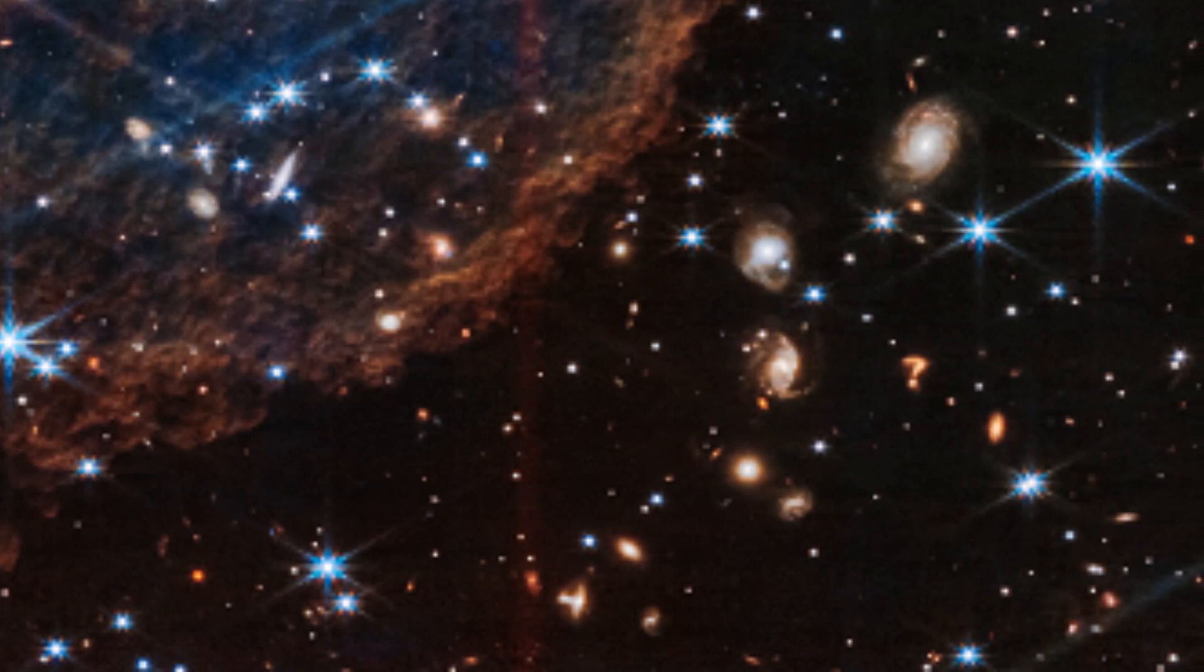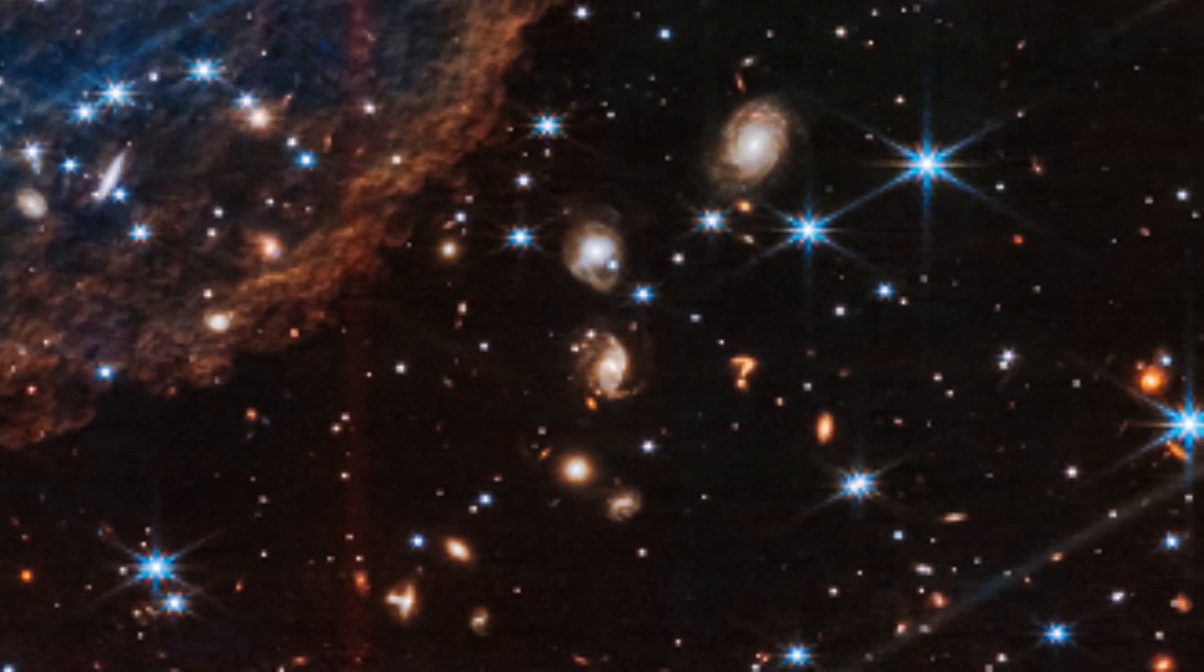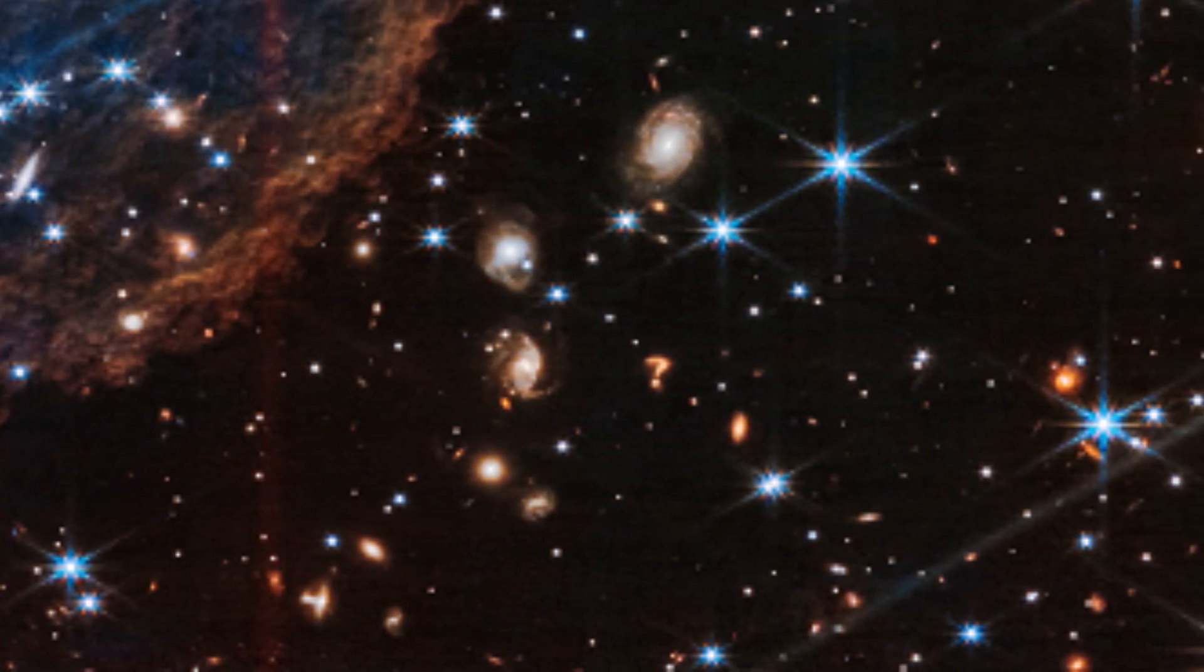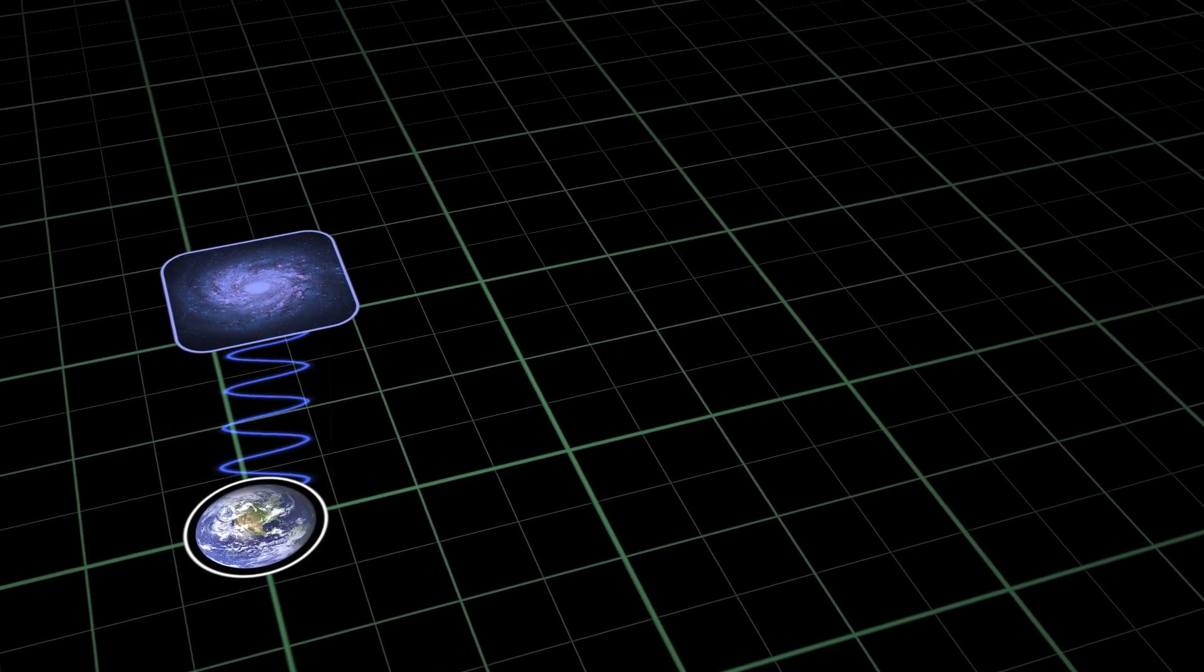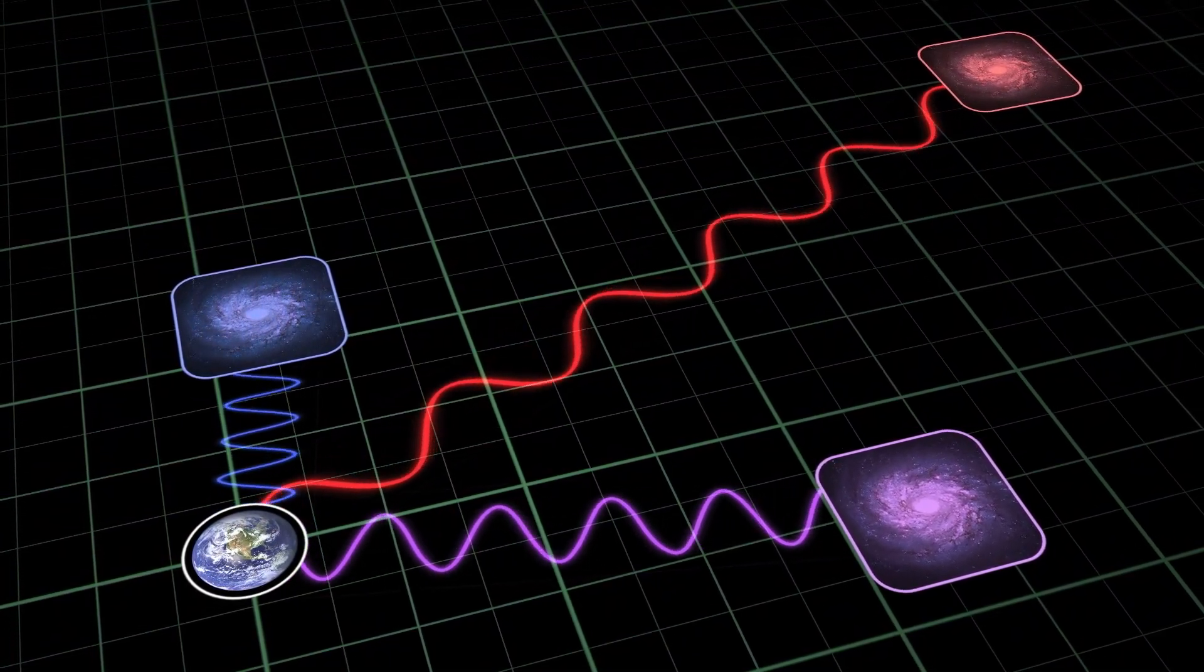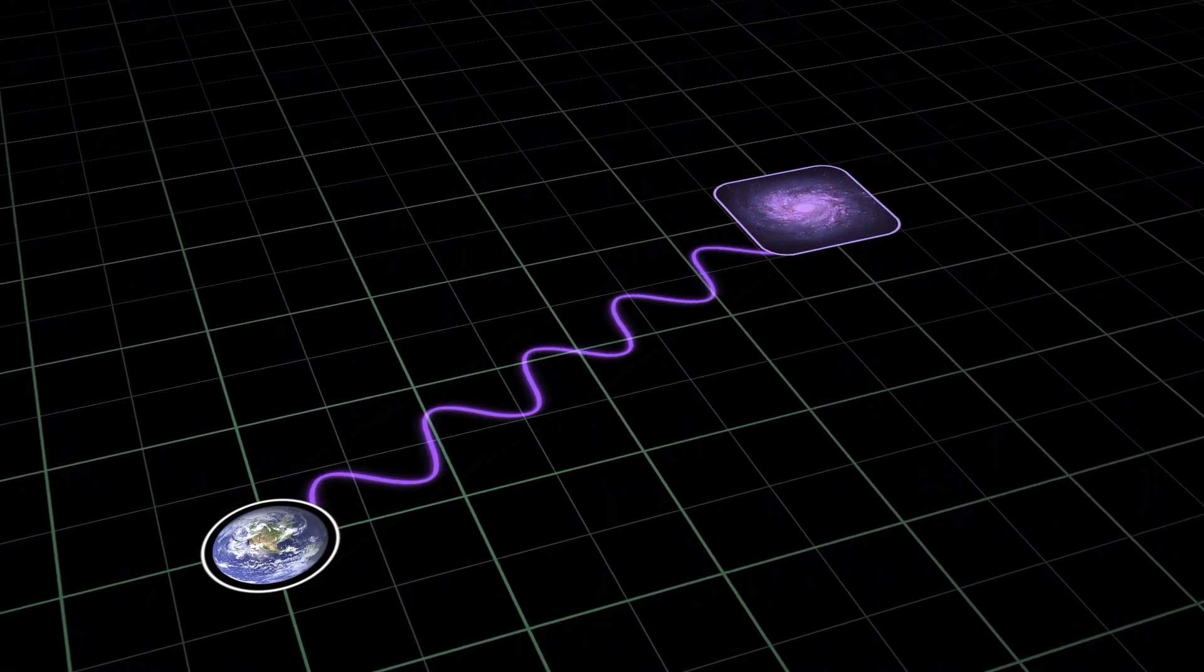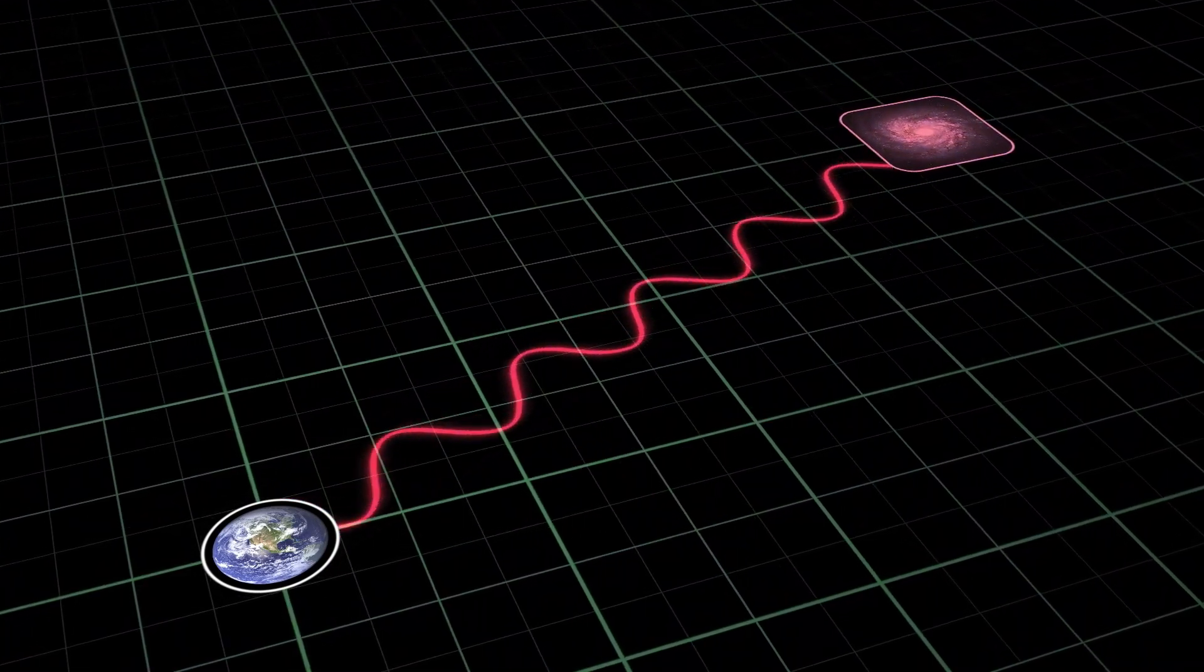The color of the object also gives us some clues about its nature. It appears to be reddish, which means that it is very far away from us. The light from distant objects is stretched by the expansion of the universe, making them appear redder than they actually are. This effect is called redshift, and it helps us measure how far away and how fast objects are moving in the universe.